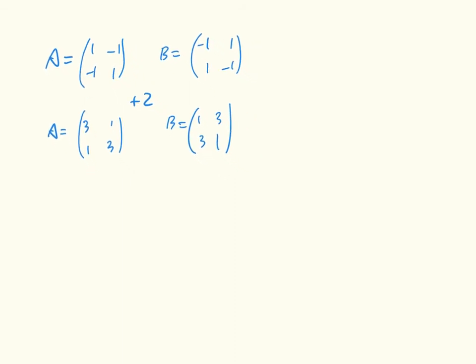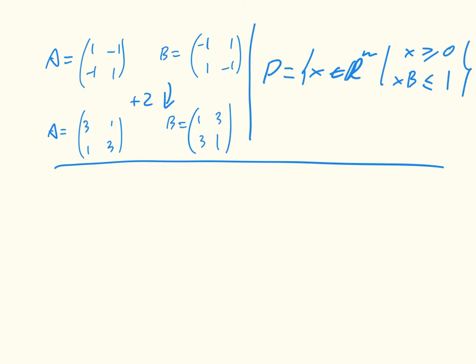And let me just write down the definition of P once again. So P is going to be equal to X belonging to R to the M, such that X is greater or equal to zero, and XB is less than or equal to 1. So our best response polytope P has the following inequalities. Remember now, M is 2, so let me just make a little note of that. M is equal to 2 in this case, because we've got two rows.